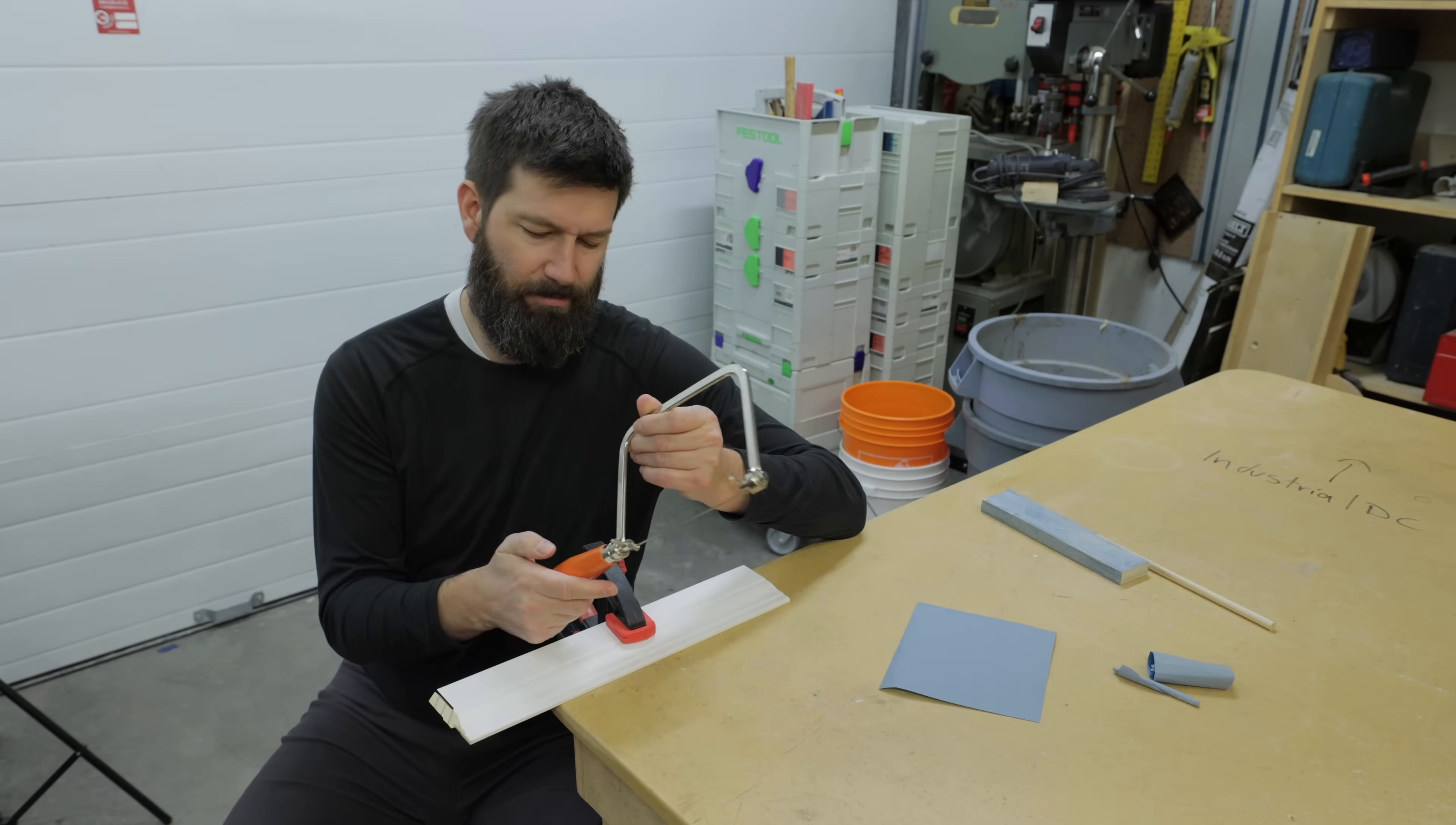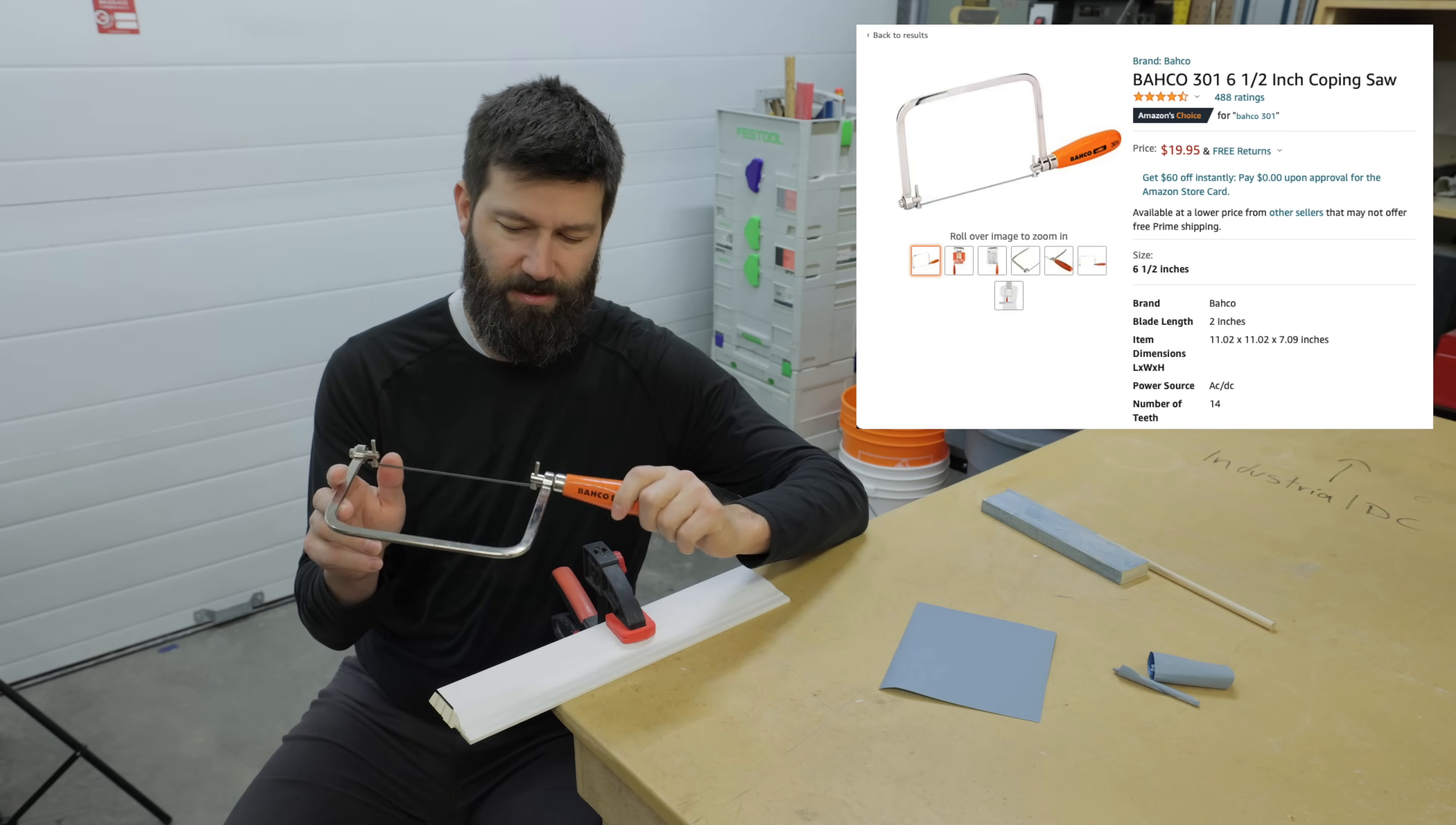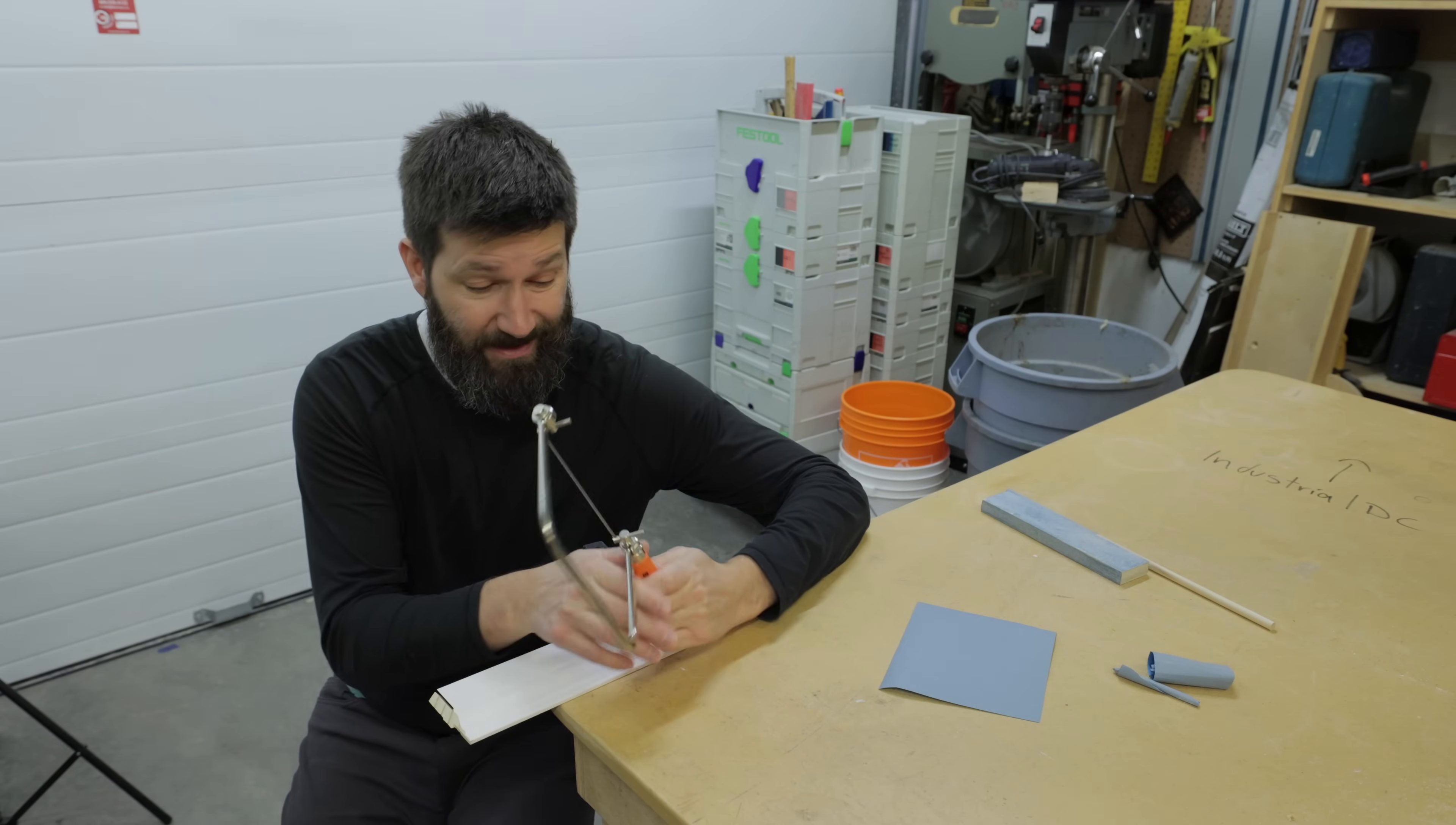You can get this saw here. This is the Bahco 301. It's kind of an industry standard for coping saws. Very nice handle on this thing. That's what I like about it. I think it's $25 Canadian. I'll put a link in the description.